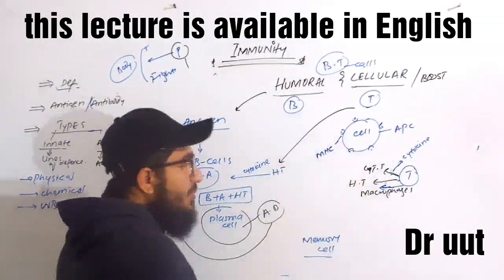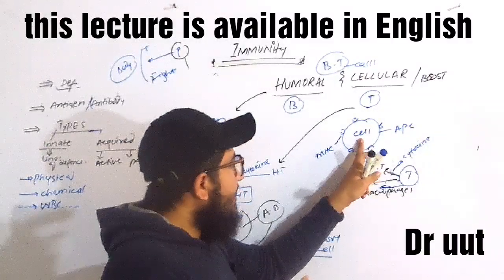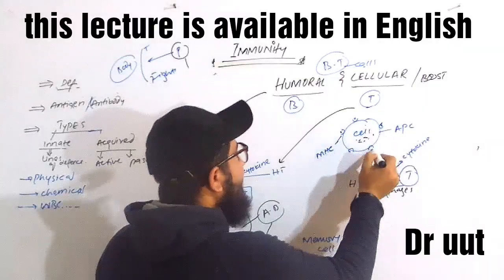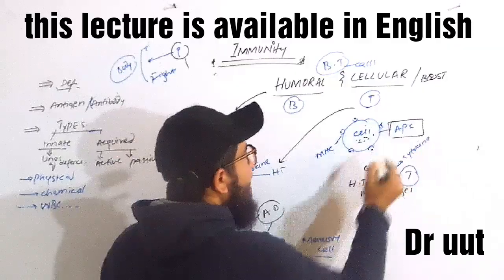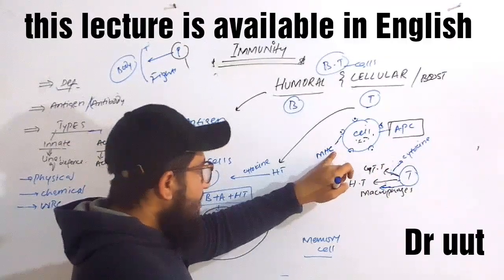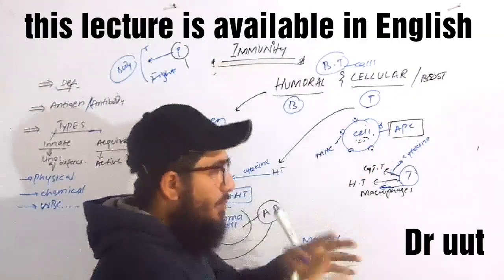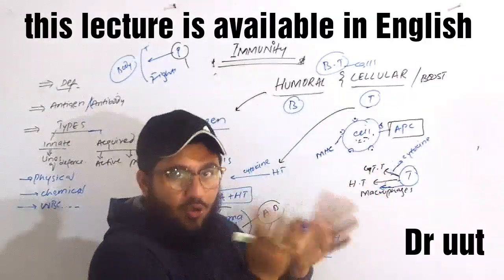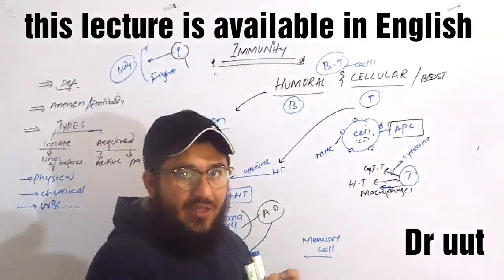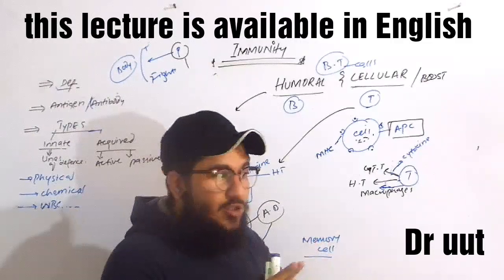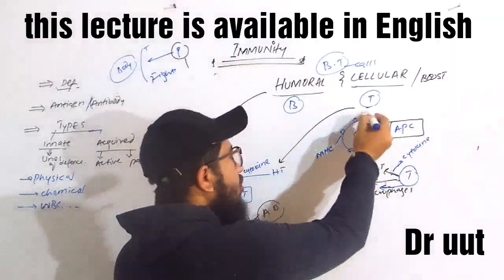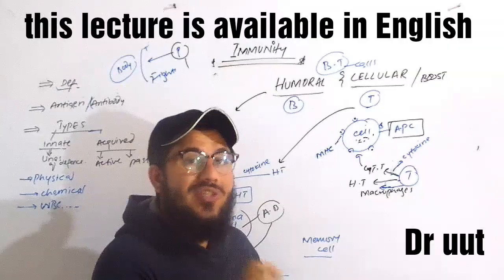In cellular immunity, when an antigen enters a cell, antigen-presenting cells process and present the antigen via the MHC — Major Histocompatibility Complex — mechanism. This activates cytotoxic T cells, which then target the infected cell.